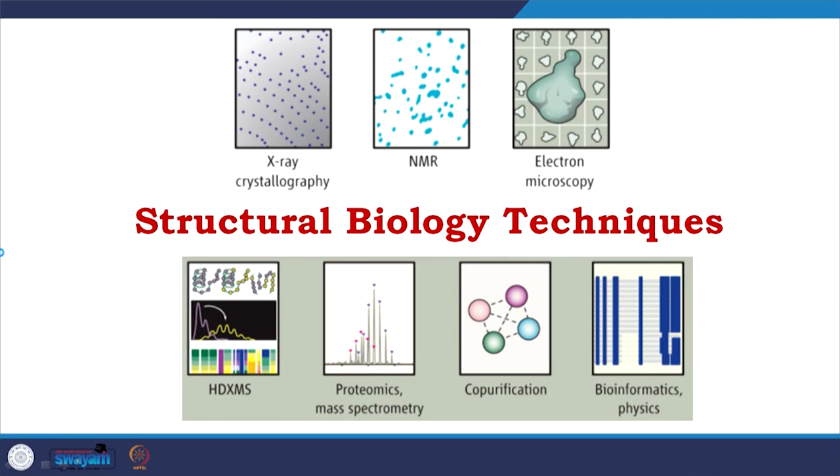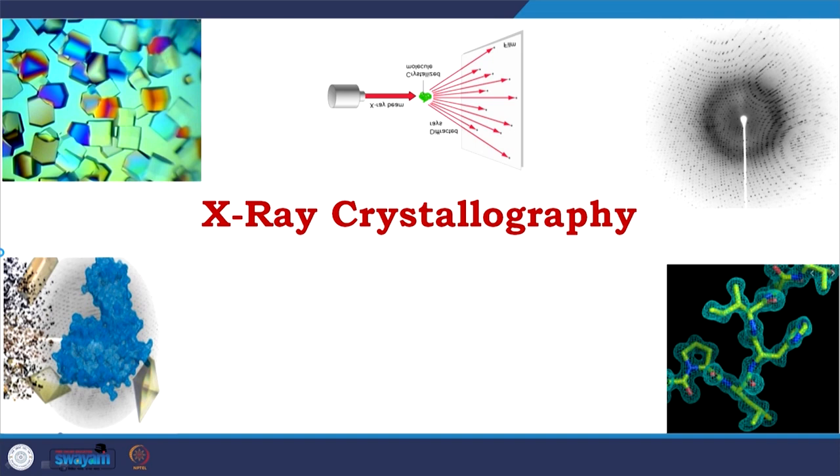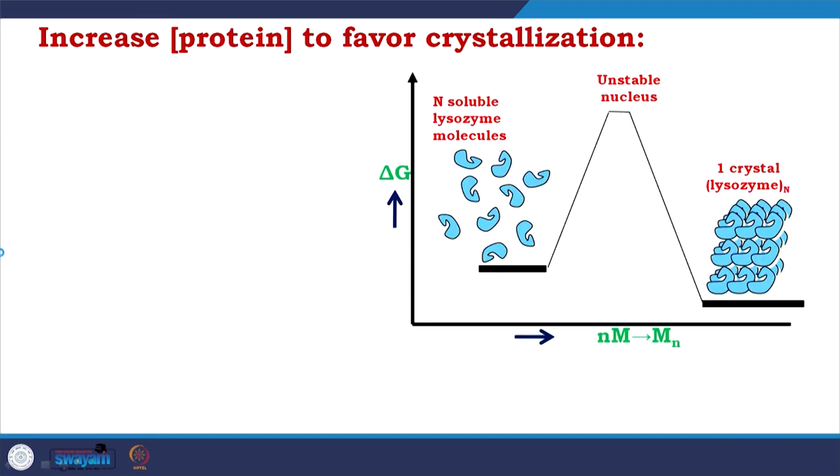Good day everyone, welcome to the course of structural biology. We are in the module of structural biology techniques, discussing x-ray crystallography. We talked about crystallization factors, strategies for personalized treatment, and how the average success rate is only 8 to 10% at optimum. Crystallization remains the bottleneck — it is the rate-determining step.